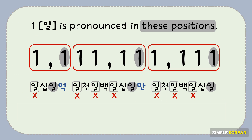One more thing you have to remember: when a number larger than 1 begins with 1, the initial 1 is not pronounced. Only 1 is pronounced in each unit. In 10, 100, and 1,000, the number 1 is not pronounced. Now you can read this number consisting of only the number 1.